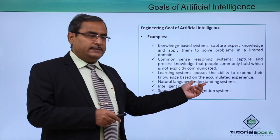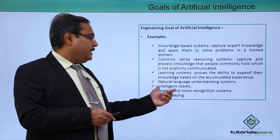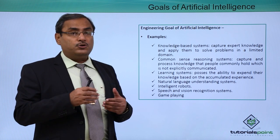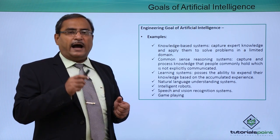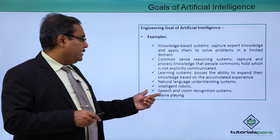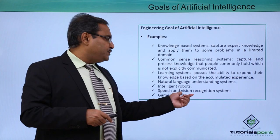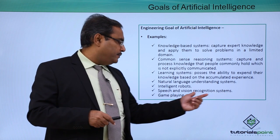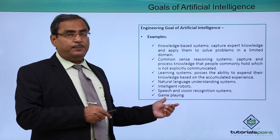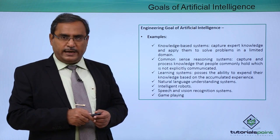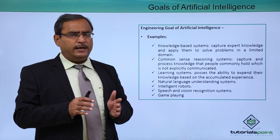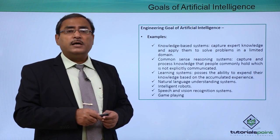Natural language understanding systems is one example. Intelligent robots — in our tutorial we discussed how a robot visiting a zoo can identify the animals it encounters. Speech and vision recognition systems, and lastly game playing, which is a very important example of AI goals. There are many different fields of application where these goals are being met.